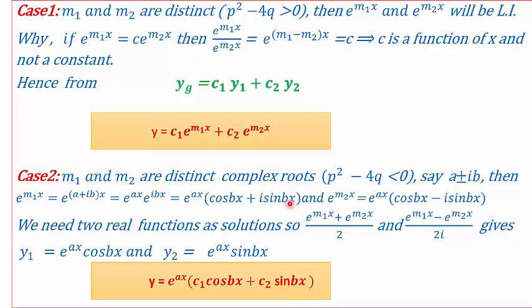Both solutions have imaginary terms, but we want real solutions. So we add the two solutions and divide by 2, and subtract them and divide by 2, to get rid of the imaginary part. The two real solutions become y1 = e^(ax)·cos bx and y2 = e^(ax)·sin bx. The general solution is y = e^(ax)(c1 cos bx + c2 sin bx).